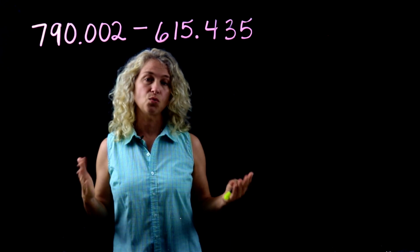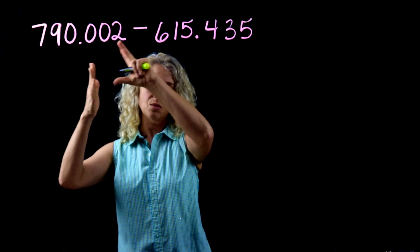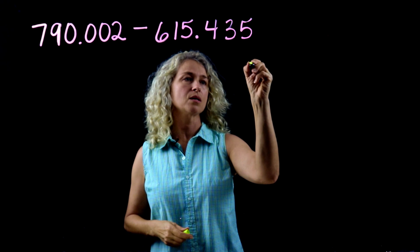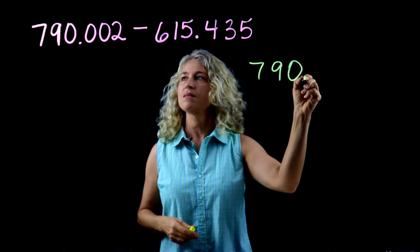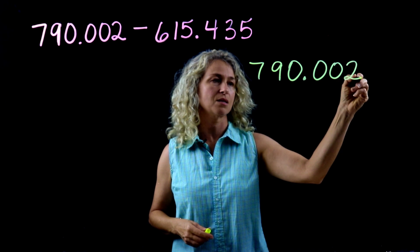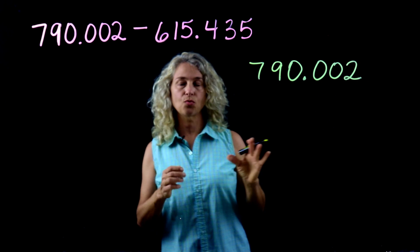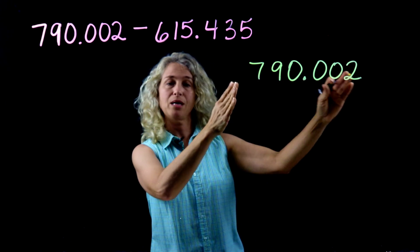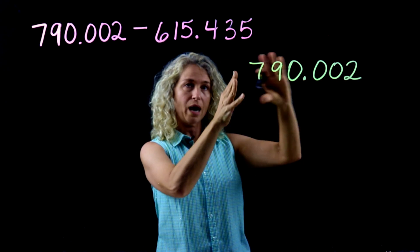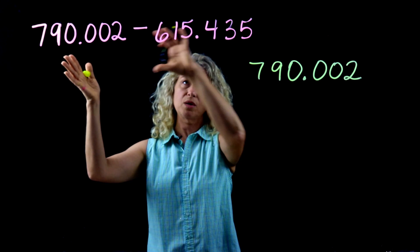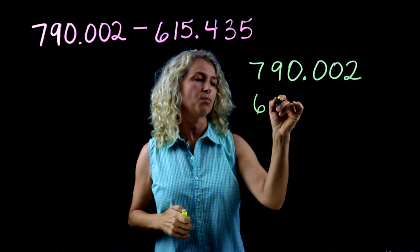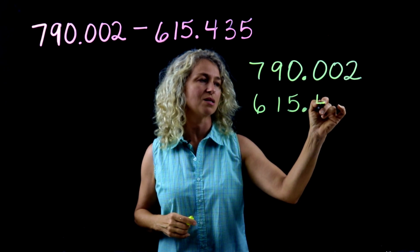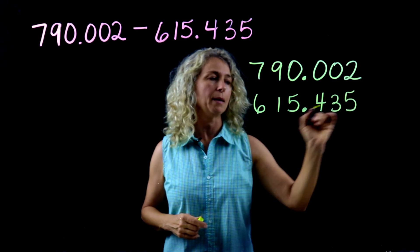The very first step is to rewrite the problem vertically, because we can't subtract with it written horizontally. Rewrite seven hundred ninety and two thousandths on top — your first number always goes on top because it has the greater value. Write six hundred fifteen and four hundred thirty-five thousandths underneath, making sure that you line up your decimals.